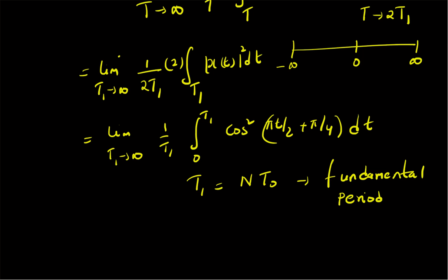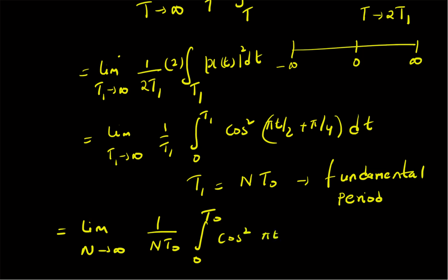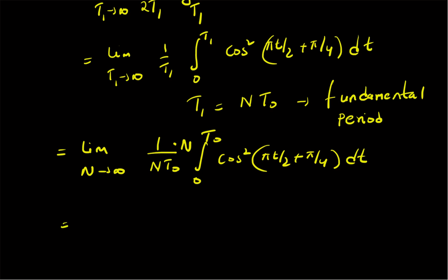With T₁ = n·T₀, we rewrite as the limit as n tends to infinity of (1/n·T₀) times the integral from 0 to T₀ of cos²(πt/2 + π/4) dt. This integral over one fundamental period must be repeated n times, so it is multiplied by n. We can then cancel the n's and the limit disappears, leaving us with (1/T₀) times the integral from 0 to T₀.